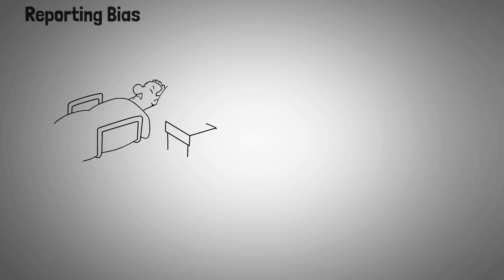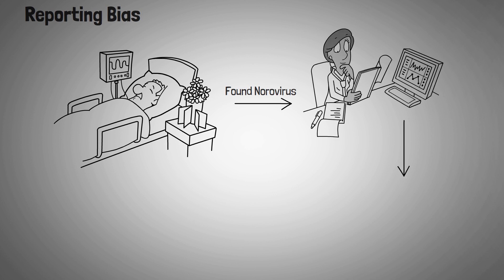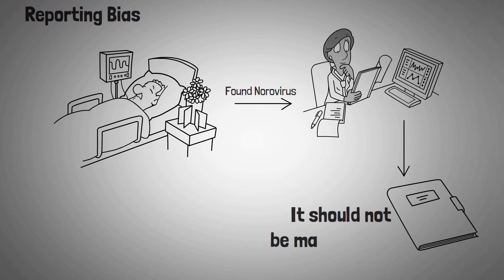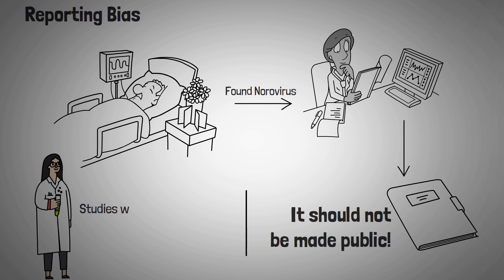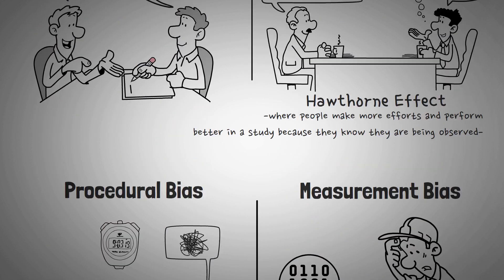Reporting bias, also called selective reporting, arises when the dissemination of research findings is influenced by the nature of the results. This type of bias is usually out of the researcher's control. Despite the fact that studies with negative results can be just as significant as positive ones, the latter are much more likely to be reported, published, and cited by others.